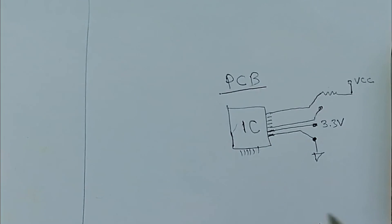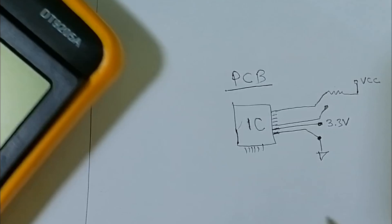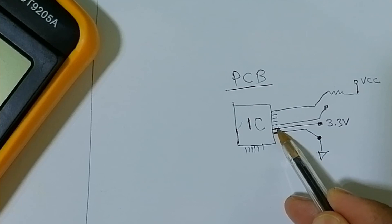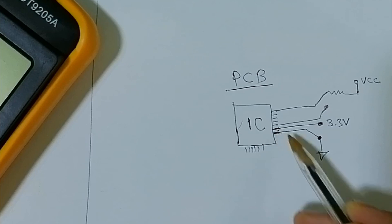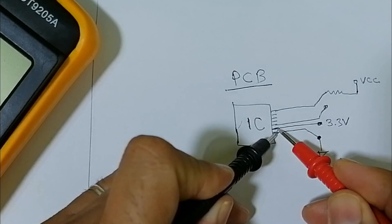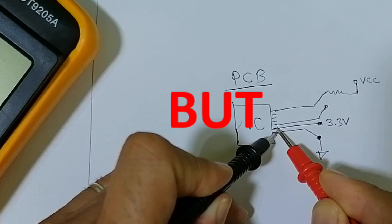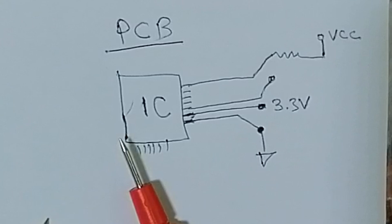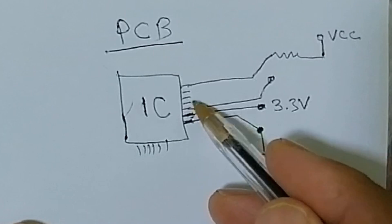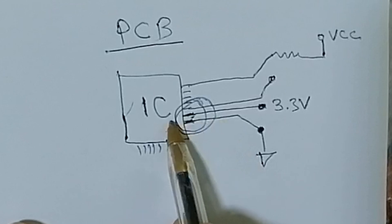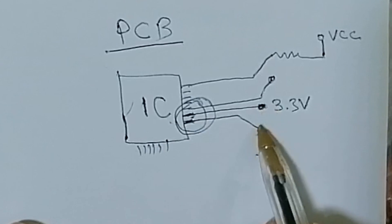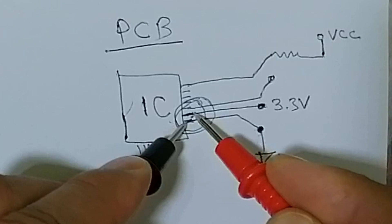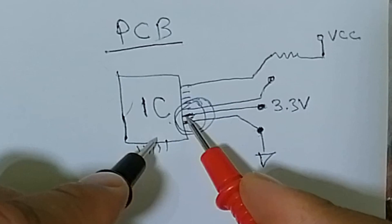Let's assume that you want to use the multimeter to check whether you have here 3.3V or not. Here we have the ground, and here we have 3.3V. But avoid testing in this area — this area is dangerous. Use extension. Always use extension, because if you try to test here, you can make a short circuit.